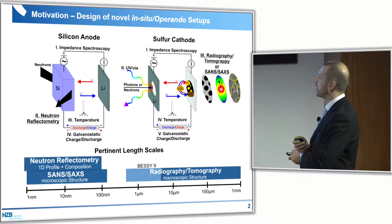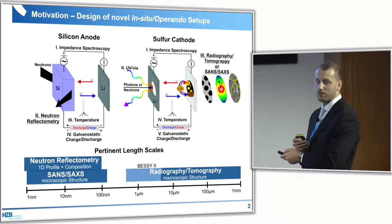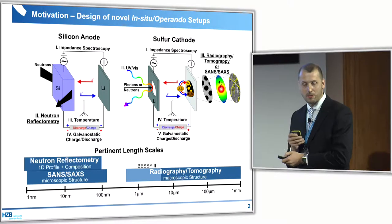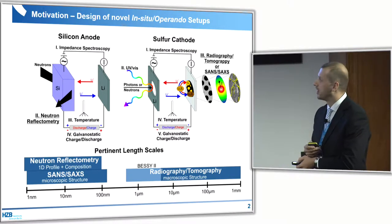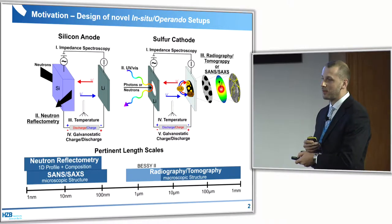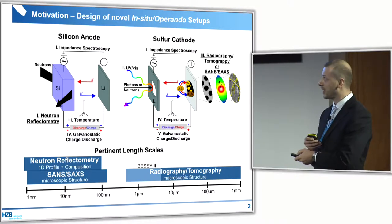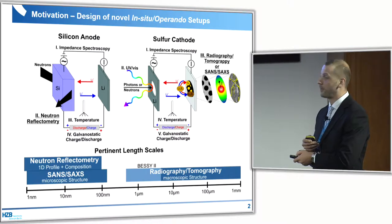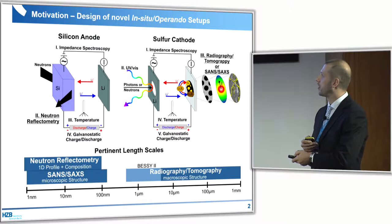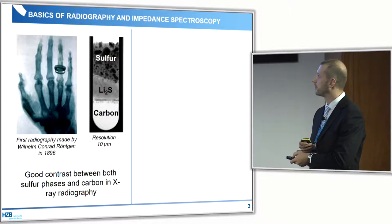At this point I really want to mention something very important: we had to design a very well-working operando cell, and this is not such an easy task. We are now on version number four, and version number five will come next. Now we are getting really nice curves.